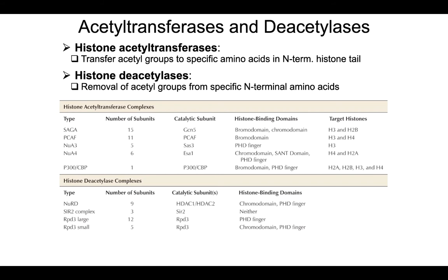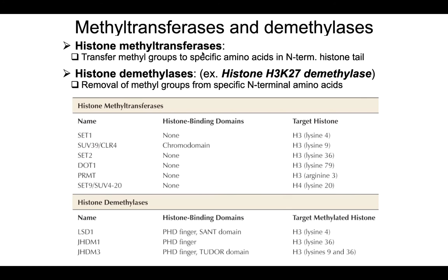There are several different types of enzymes that catalyze modifications on N-terminal tails of histones. There are histone-acetyltransferases that add acetyl groups; histone-deacetylases that remove acetyl groups from N-terminal tails; histone-methyltransferases that add methyl groups to various R groups of amino acids within these N-terminal tails; and histone-demethylases — for example, histone H3K27 demethylase, your JMJD3 and UTX. These are oftentimes extremely specific enzymes that catalyze the addition or removal of methyl groups from very specific amino acids in very specific histones.